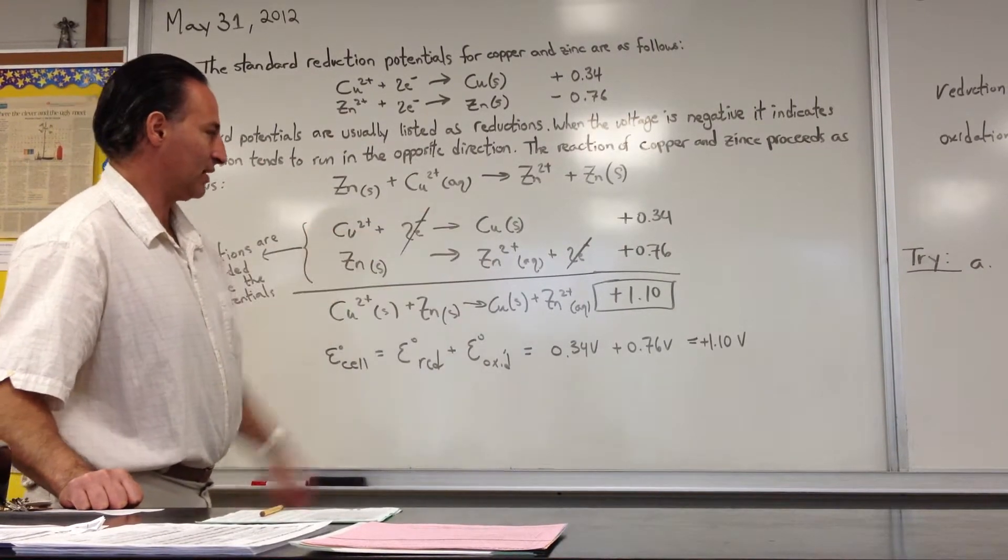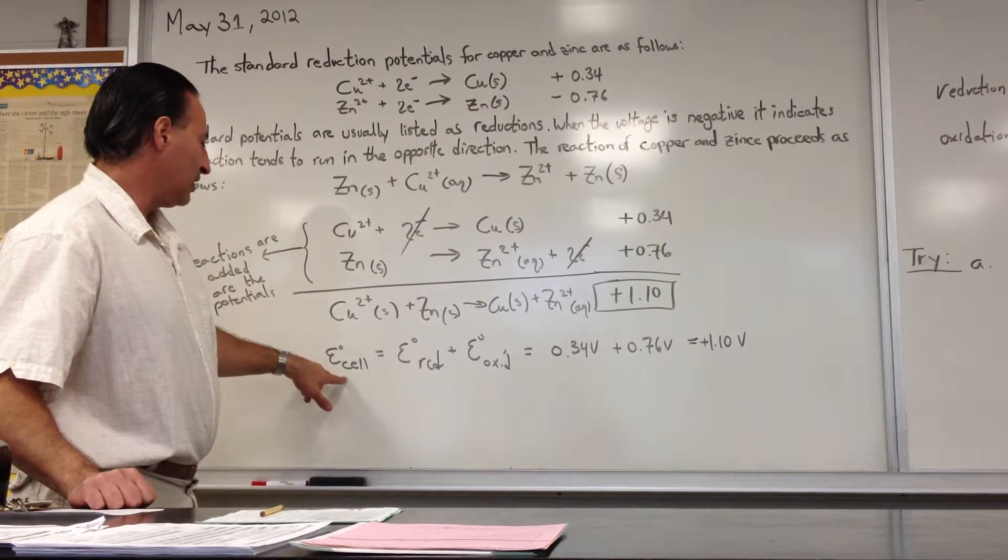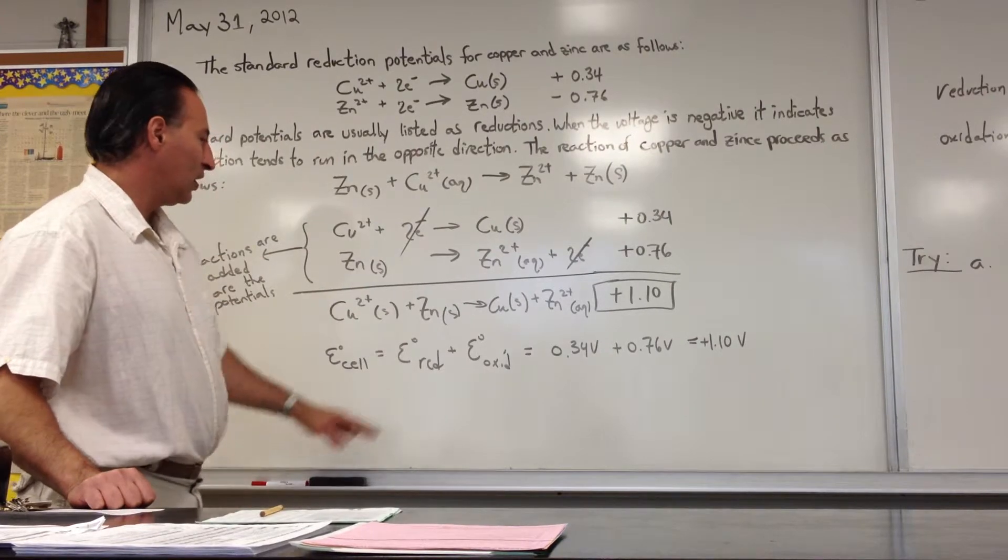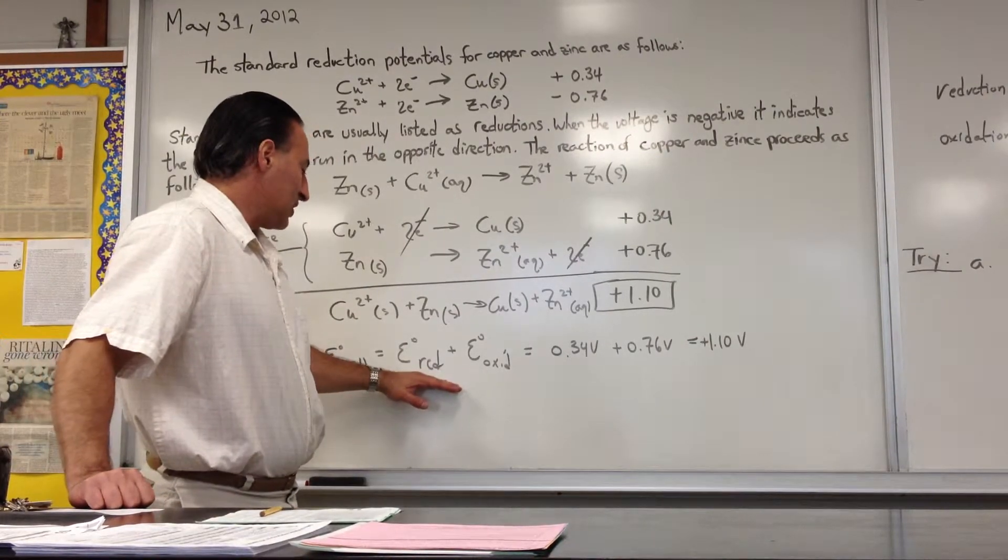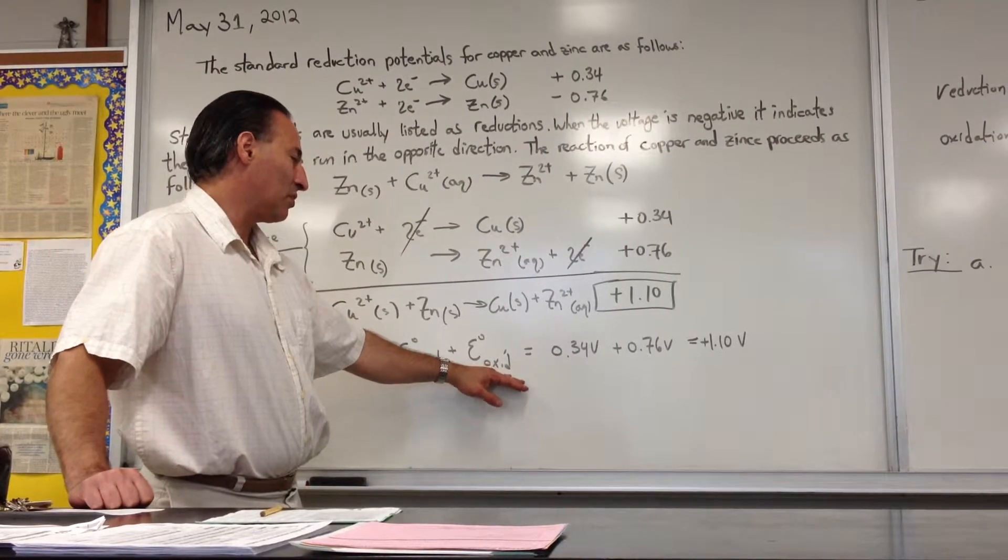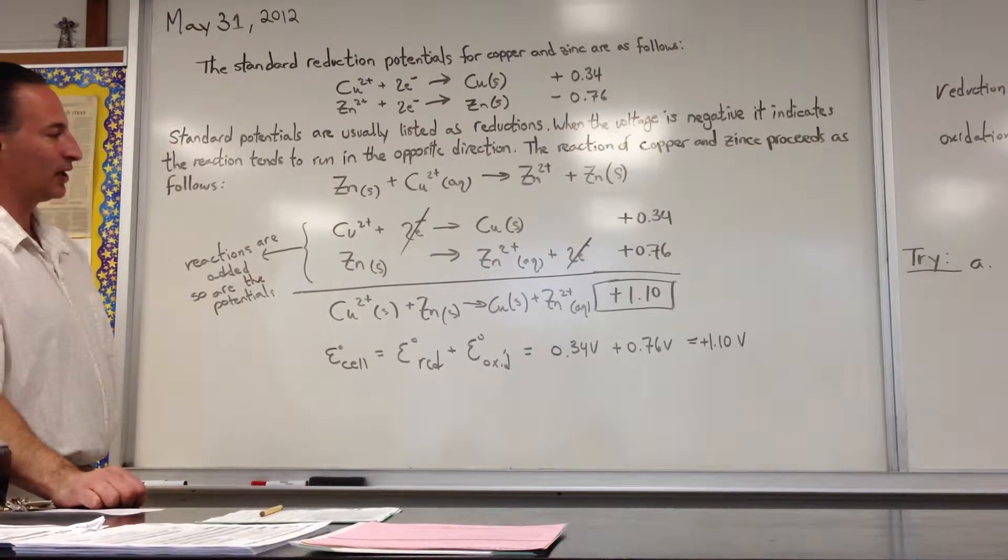When you add the two reactions, you would add the potentials. And to remember that, you would say that E0 cell, the voltage generated by a cell of this sort, is equal to the standard reduction potential plus the standard oxidation potential. When we say standard, we mean that the concentrations of all these substances are one mole per liter.